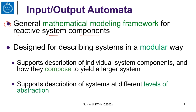Input-output automata are designed for describing systems in a modular way. This means they support descriptions of individual system components and also describe how they compose to yield a larger system. They also support descriptions of a system at different levels of abstraction — for example, a detailed implementation or a high-level algorithm, an optimized algorithm or a simple unoptimized version. You can also reason about equivalence between these descriptions.